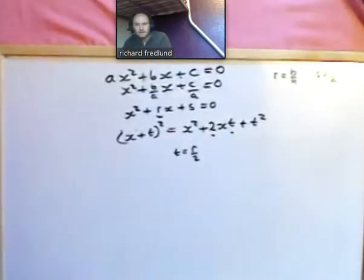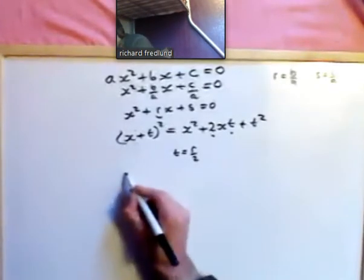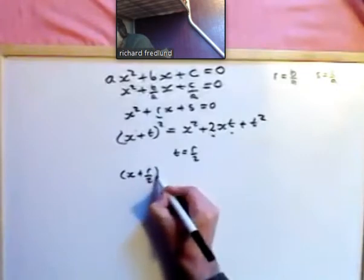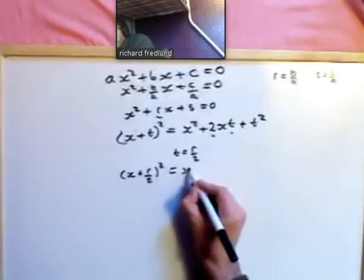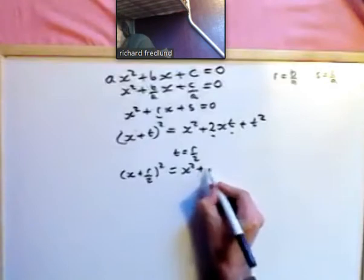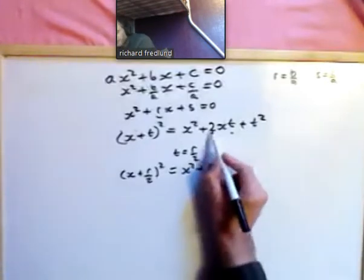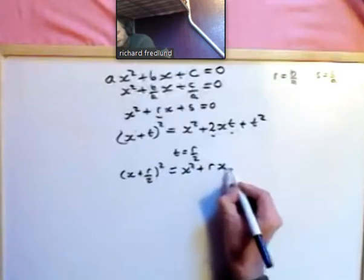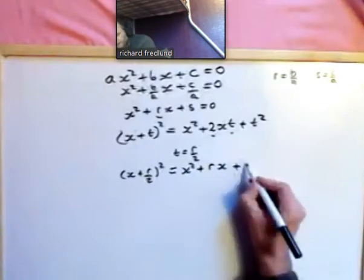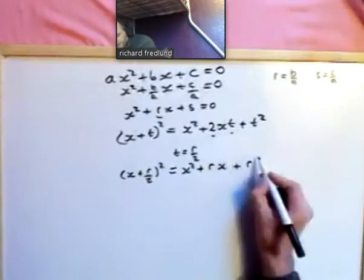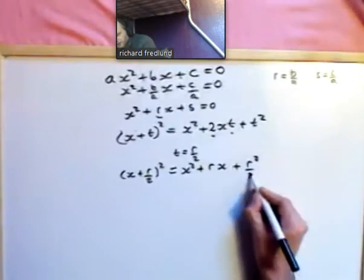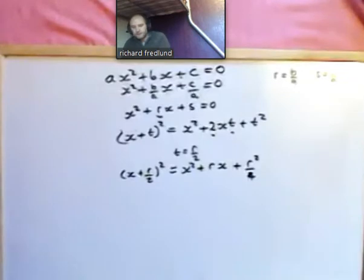If we make t equal to r over 2, then x plus r over 2 all squared would be x squared plus rx plus r squared over 4. Notice the 2 and the t cancel, giving us rx, and then r squared over 4.